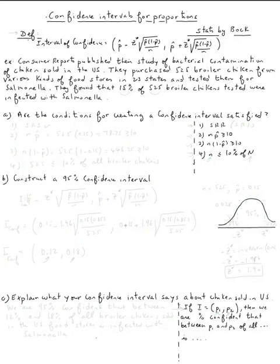The topic is confidence intervals for proportions. So let's read the definition. The interval of confidence is p hat minus z star square root of p hat one minus p hat divided by n, and then p hat plus z star square root of p hat one minus p hat over n.